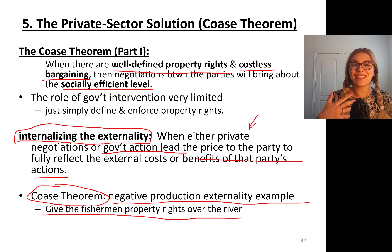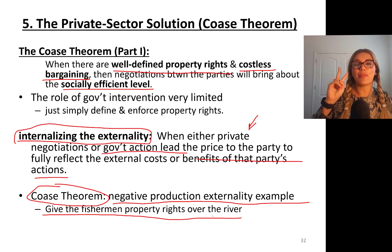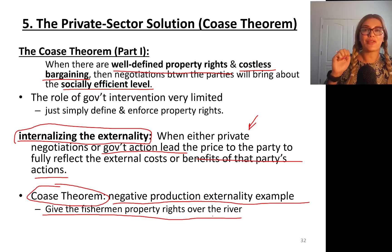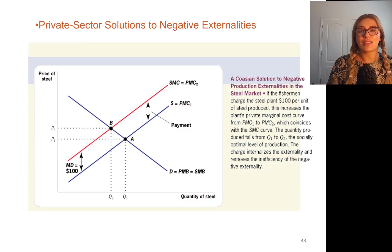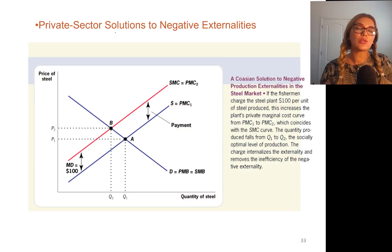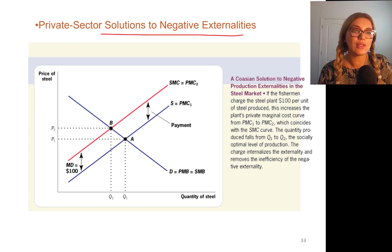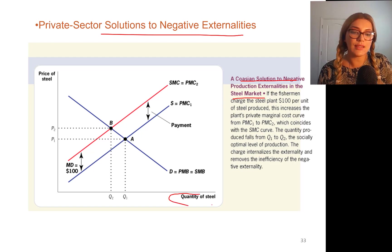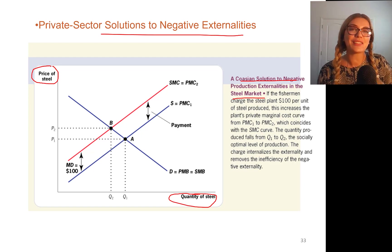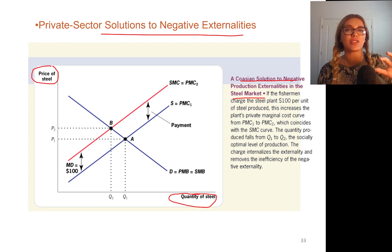If you're not sure about the example, go back and watch part one and part two of the chapter five videos. So this is a Coase solution to negative production externalities in the steel market — quantity of steel on one axis, price of steel on the other. The story was that the steel factory produced steel and as a by-product of production, they dumped sludge into the river and that hurt fisheries.